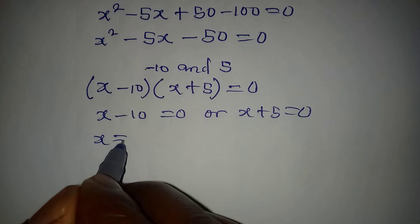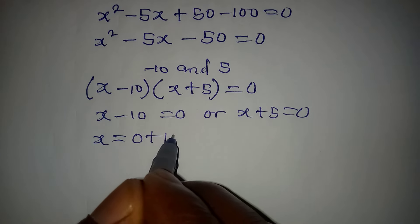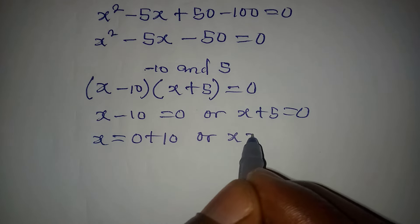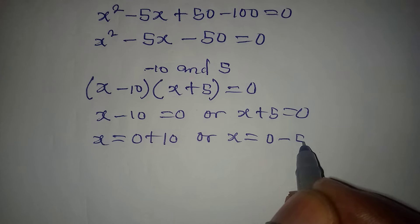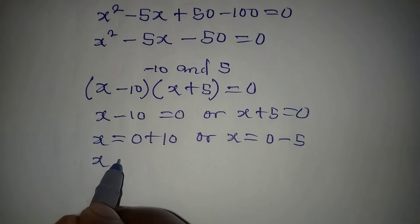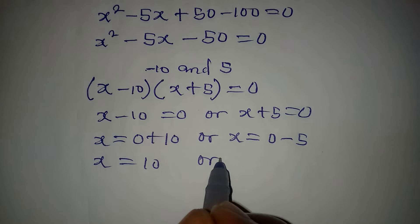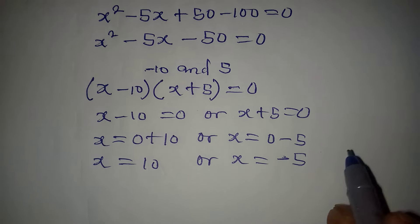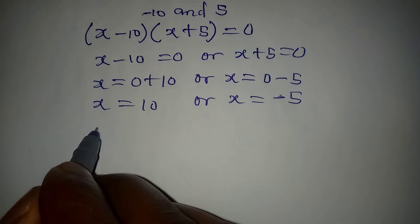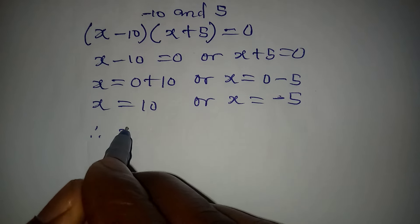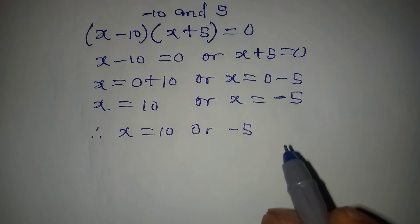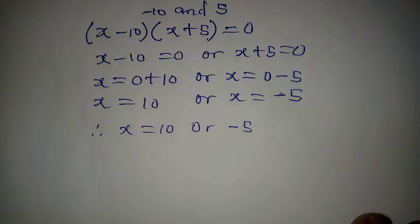So x = 10 or x = -5. Therefore x is equal to 10 or -5.